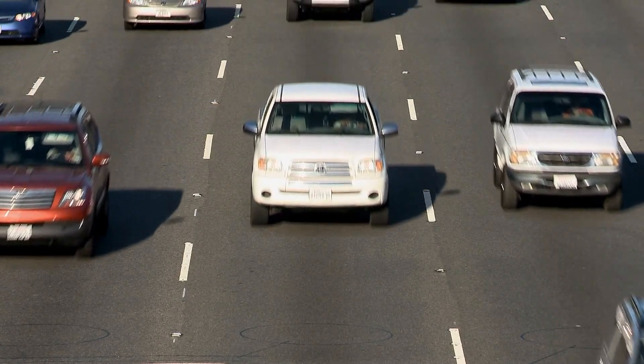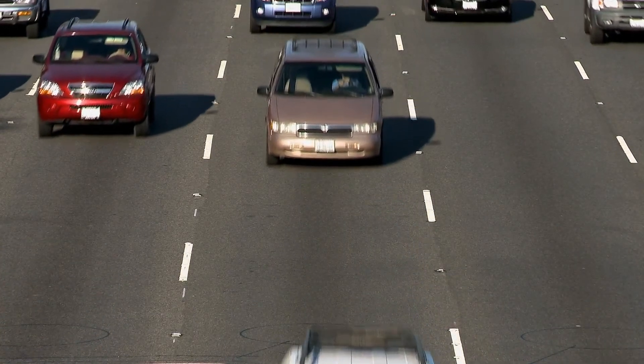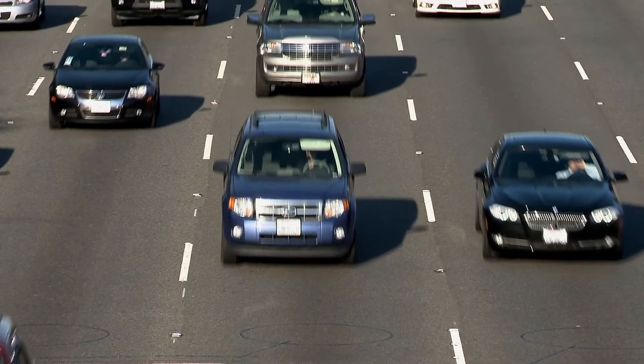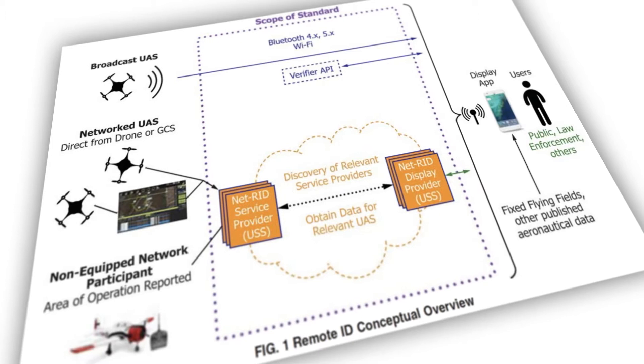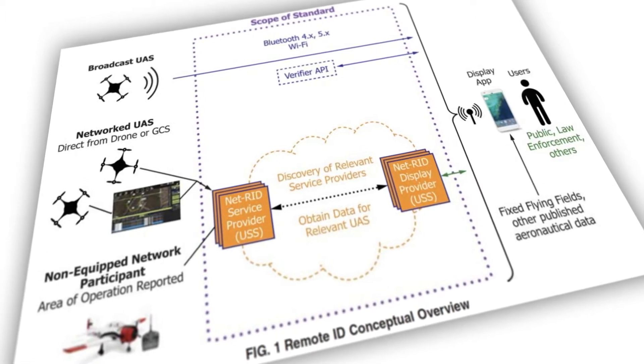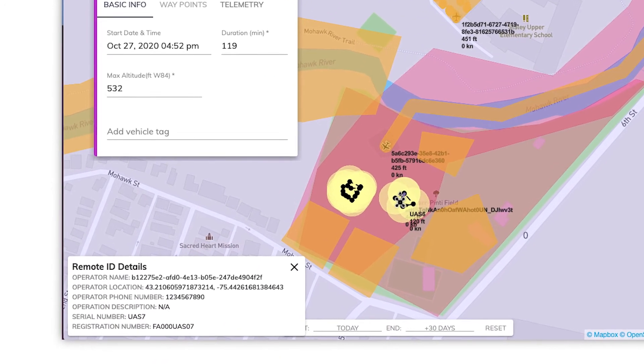A very clear analogy between remote ID and something that already occurs today is that of license plates. License plates provide traceability to an automobile and the user of that automobile for those authorized to get that information. Remote ID is essentially the same type of capability, however in a more digitized manner, with safe and secure data exchange between the drone itself to the USS or to a third-party application.